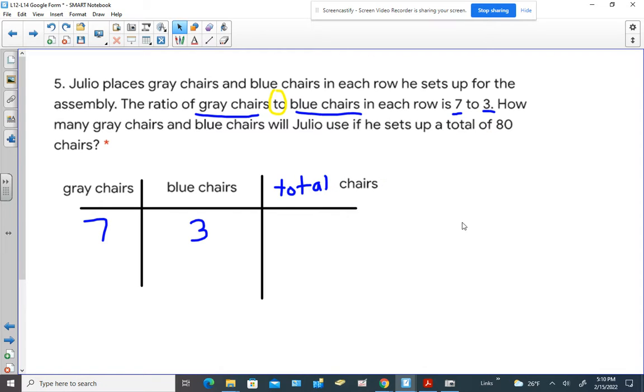Now they do give a number in the problem that does talk about total chairs. That's this number right here. It says he's setting up 80 total chairs. Now before we plug that number in you have to ask yourself how do I get this number that pertains to the seven and the three? We would be adding the seven plus three and that's going to give us the total chairs we need for this particular ratio. So we have the part plus the part equaling the whole.